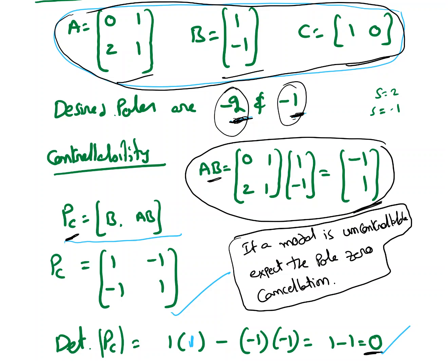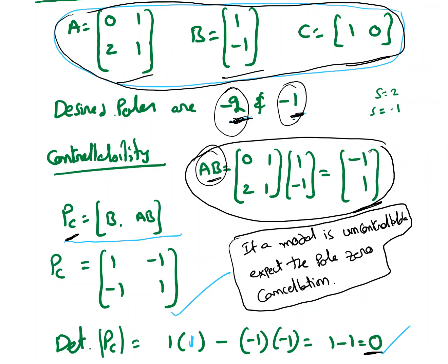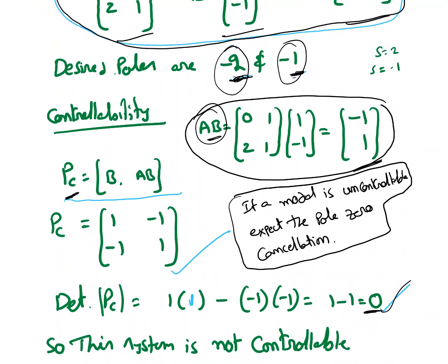These are the desired poles. Step 1, we will find controllability. To find controllability, P_c equals [b, Ab]. I found Ab equal to the column matrix [-1; 1]. We already have b as [1; -1], so the determinant of P_c becomes 0. Whenever the determinant of P_c equals 0, that means the model is uncontrollable. So this system is uncontrollable.